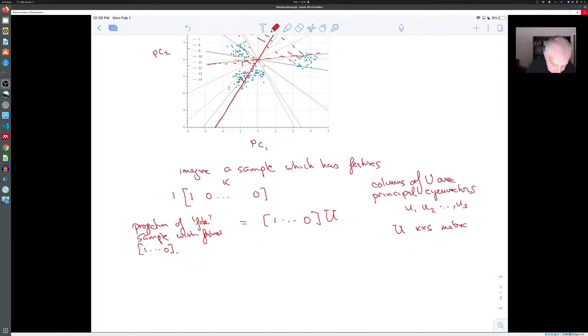And you could do that for each of the features. And if you did that for each of the features, you could look at the matrix one, one, one, which is K by K. It's the K by K identity matrix. And you could multiply it by U.